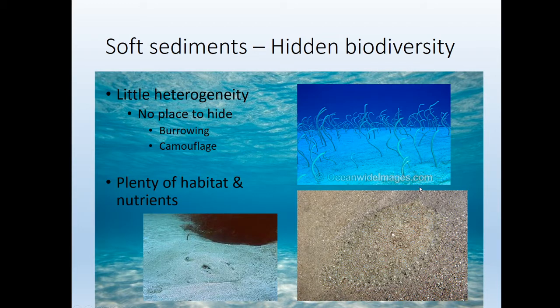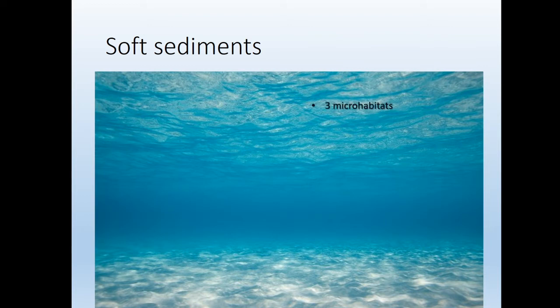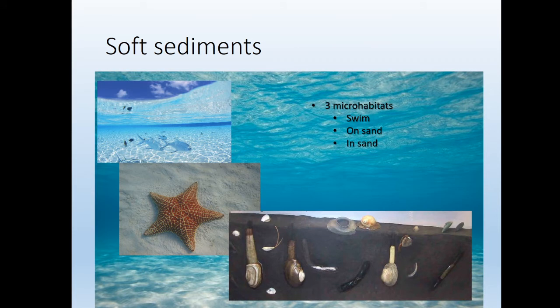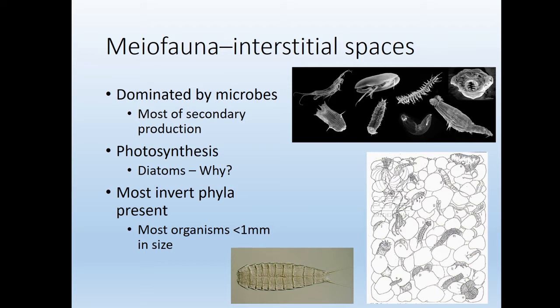There are little grass eels that would hide underground if you swam close. There's plenty of habitat and nutrients, but it's really hard to live here because there's no place to hide and it's hard to escape predation. When thinking about soft sediments, consider three micro-habitats: you can swim in the water column, be on the sand, or be in the sand. Each has its own benefits — easy movement in the water column, contact with nutrients on the sand, and more protection underground.